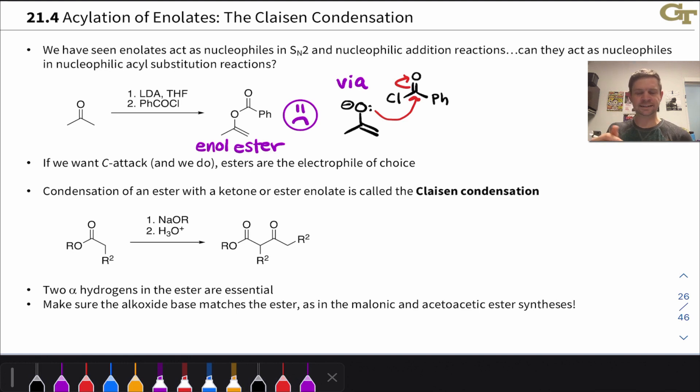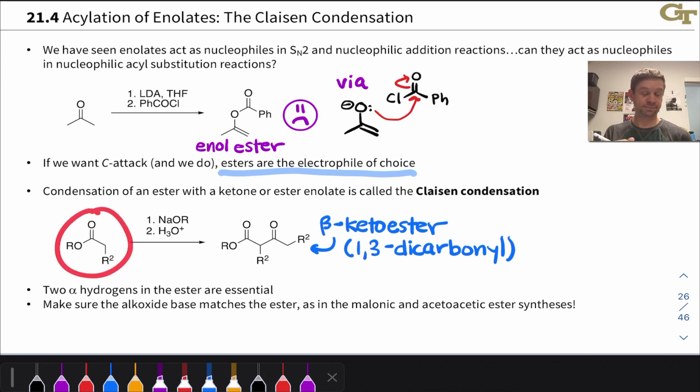The basic idea of the Claisen condensation is that we start with an ester, and that ester needs to have at least two alpha hydrogens for reasons we'll tackle in a second. When we treat that with alkoxide base, NaOR, Na+, OR-, followed by acidic workup—and that acidic workup is essential—the product we get contains a new carbon-carbon bond.